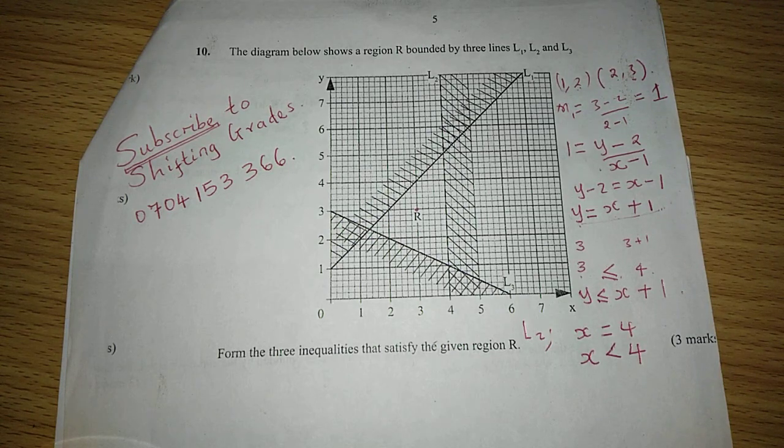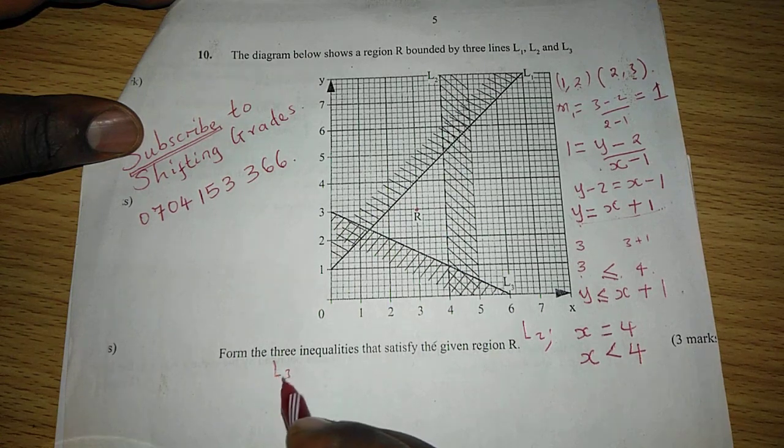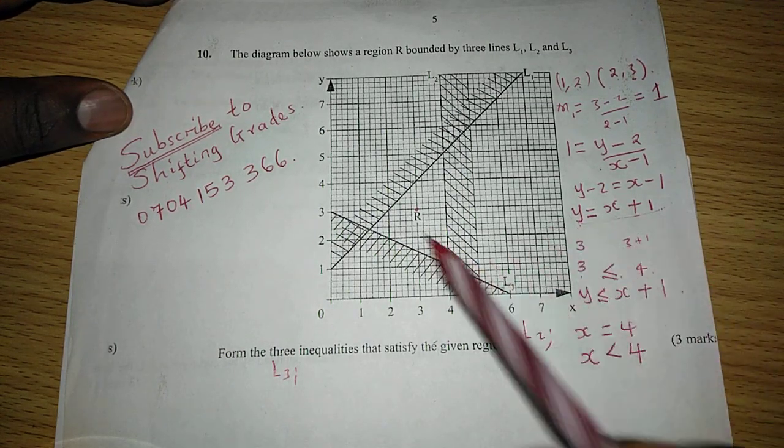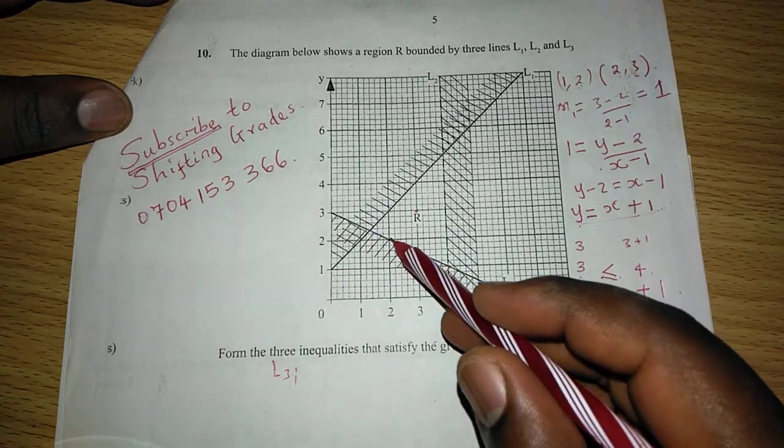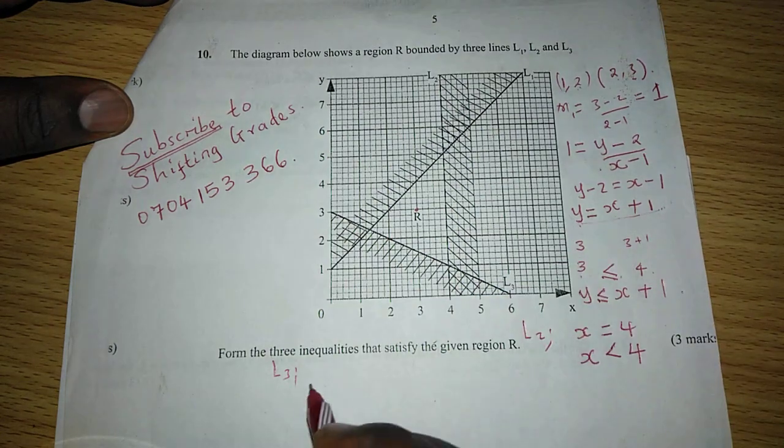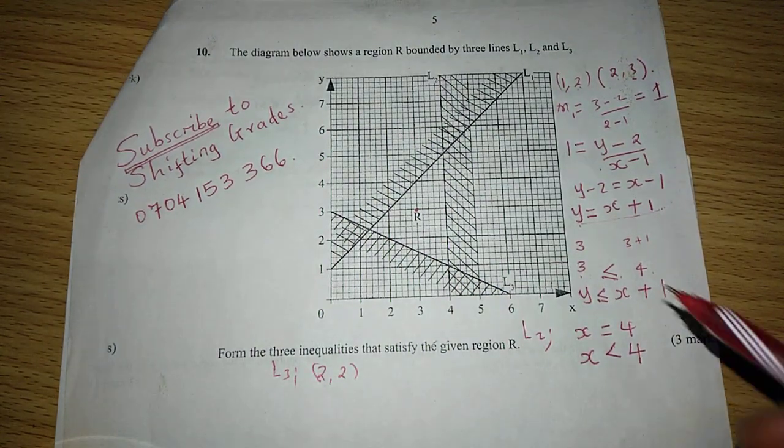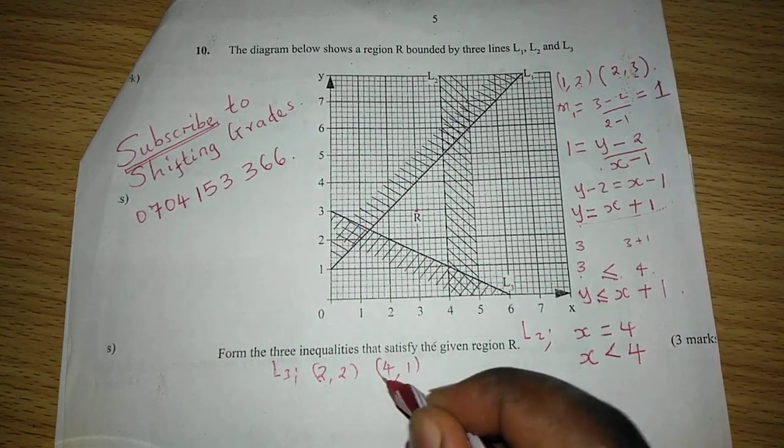The last line, L3. We can first of all get two coordinates along L3. And two coordinates can be picked as coordinate 2, 2, and also coordinate 4, 1.